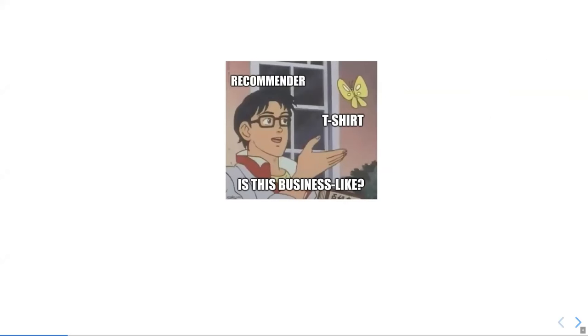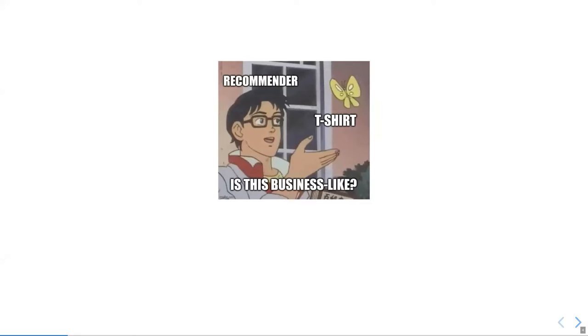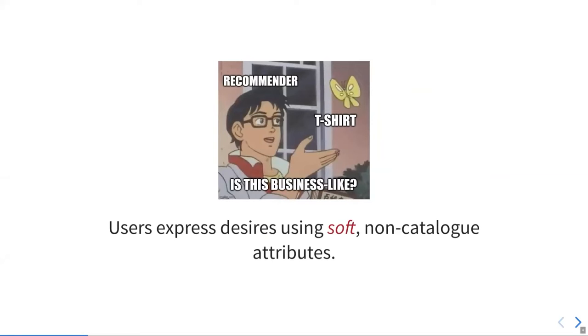In our specific example, the problem is how is the recommender supposed to know whether something such as a t-shirt is business-like. Because business-like is a soft attribute, non-catalog, which a priori there's no information if a given item is or isn't business-like.